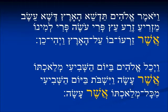Bereishit bet, pasuk sh'tayim — Genesis 2:2. V'yichol Elohim b'yom ha'shii malakhto asher asha v'yishbot b'yom ha'shii mikol malakhto asher asha.